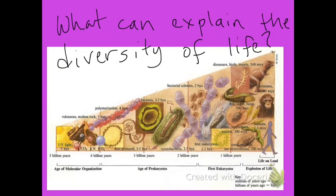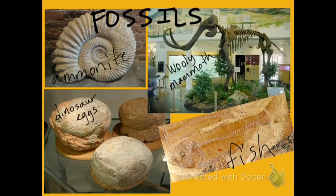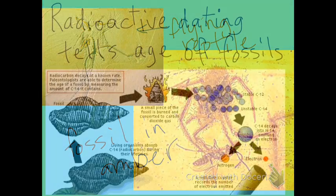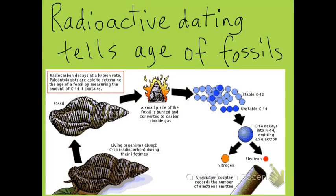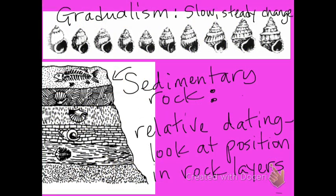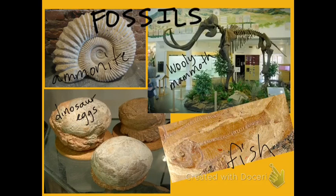Have you ever wondered what can explain the diversity of life on Earth? Here is evidence of life on Earth preserved in fossils — a flying reptile and a fossil in amber. A process called radioactive dating tells the age of fossils using a chemical measurement. Another type of telling the age of fossils is using sedimentary rock and seeing the position of the fossil located in the rock layer. Another form of evolution is gradualism, where change is slow and steady, as in the shape of these shells. Fossils give us evidence of life from long ago.